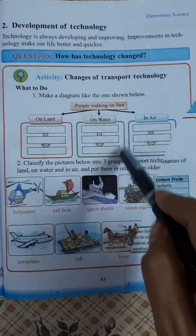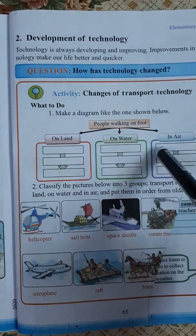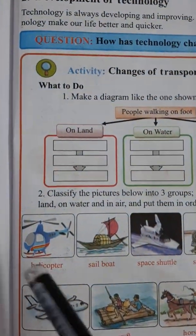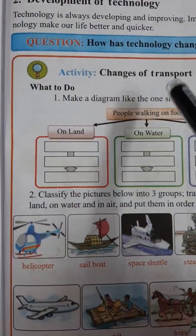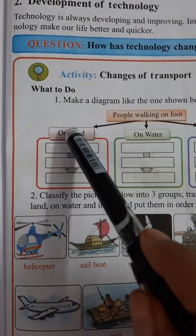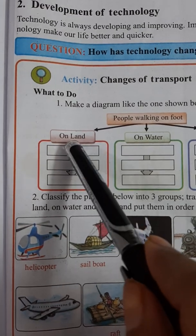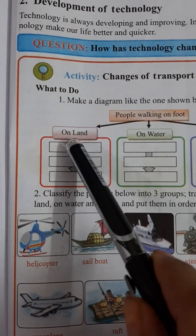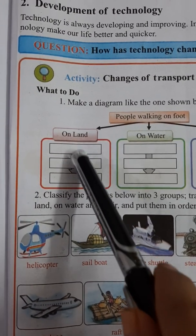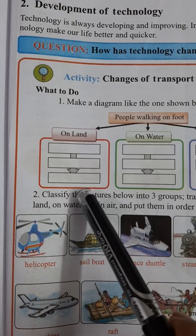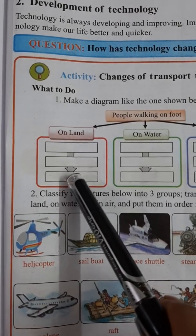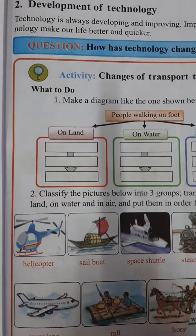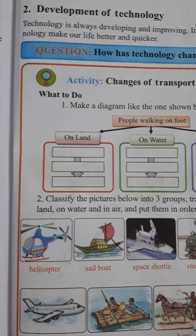You have to do this table at home. First, you will write the old technology, then gradually the newer one. On land, starting with the oldest, first of all we use...